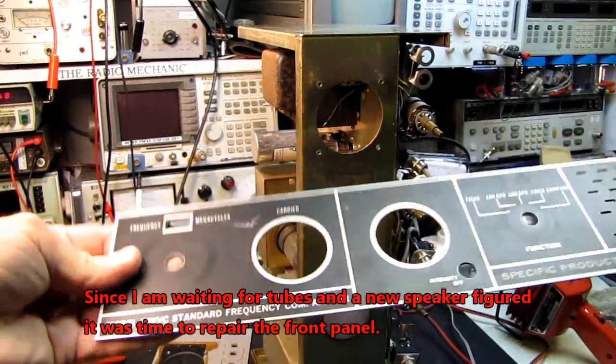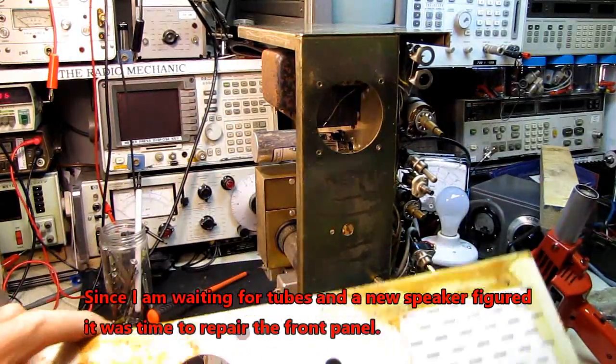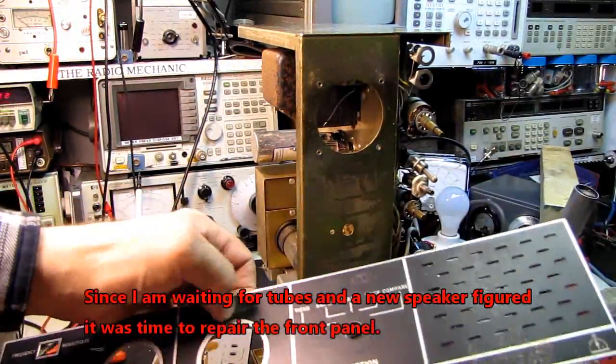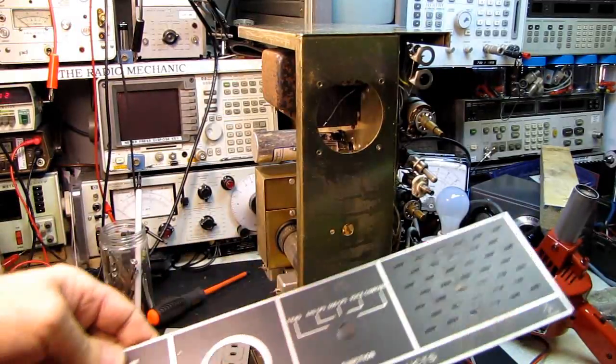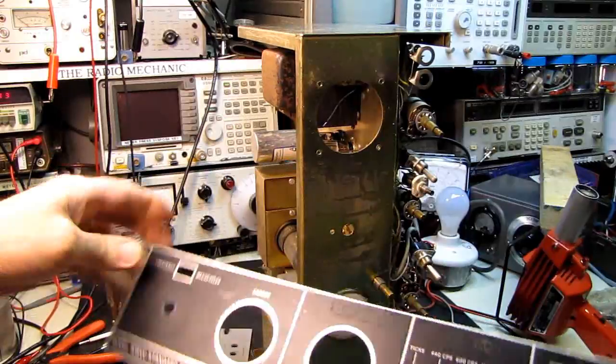We'll clean up this panel now that it's straightened out and we've got all the kinks out of it. We'll use some mineral spirits to dissolve the adhesive that's on the front where somebody had some tape on here.